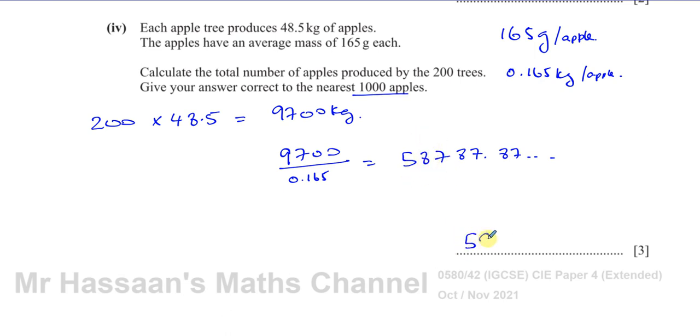Correct to the nearest thousand apples, that's 59,000 apples. So that's the number of apples produced by the 200 trees altogether. That's part four of this question.